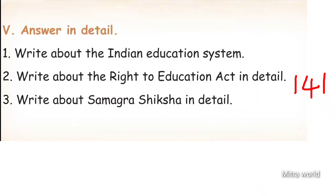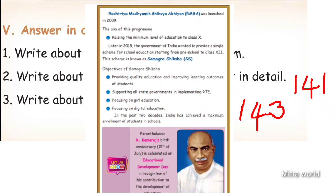Third detailed question: Write about Samagra Shiksha in detail. Page 143. In 2018, the government of India introduced a single scheme for school education from preschool to class 12, known as Samagra Shiksha. Objectives include providing quality education, improving learning outcomes, supporting all state governments in implementing RTE, focusing on girl education and digital education. In the past two decades, India has achieved maximum enrollment of students in schools.